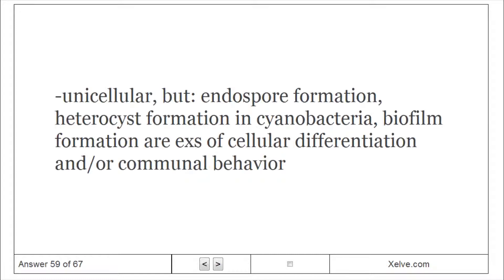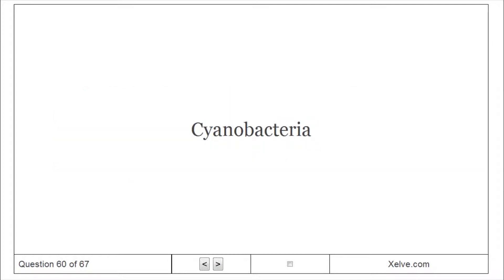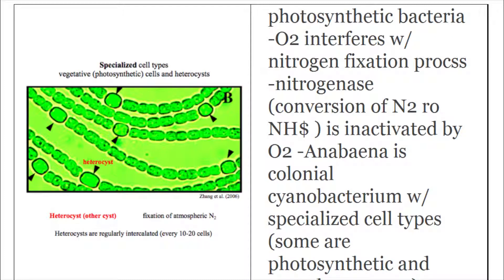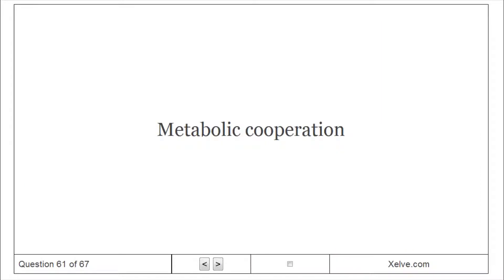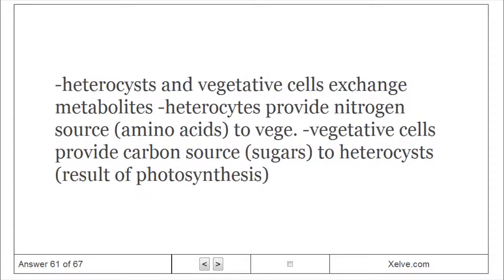Multicellularity in bacteria: bacteria are unicellular, but endospore formation, heterocyst formation in cyanobacteria, and biofilm formation are examples of cellular differentiation and communal behavior. Cyanobacteria are photosynthetic bacteria; O₂ interferes with nitrogen fixation because nitrogenase (responsible for conversion of N₂ to NH₃) is inactivated by O₂. Anabaena is a colonial cyanobacterium with specialized cell types — some are photosynthetic and some are heterocysts. Heterocysts and vegetative cells exchange metabolites: heterocysts provide nitrogen sources (amino acids) to vegetative cells, while vegetative cells provide carbon sources (sugars) from photosynthesis to heterocysts.